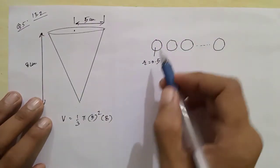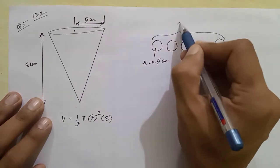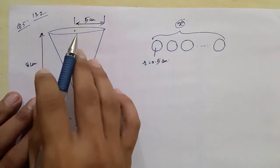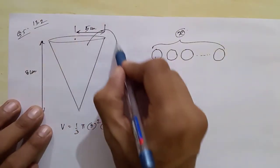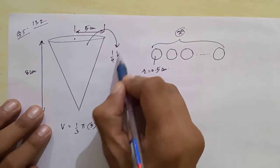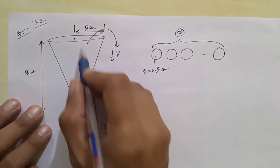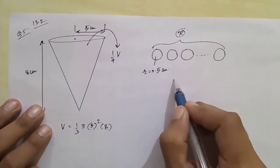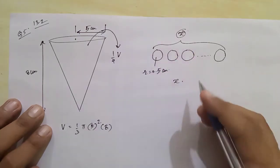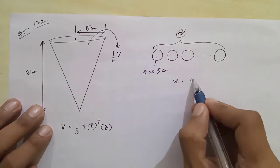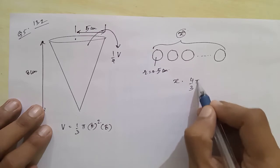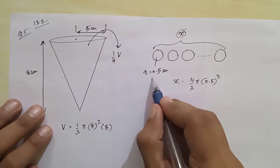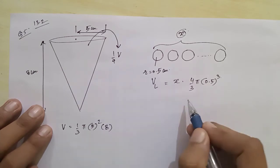There are a number of lead shots dropped in. How many lead shots are there such that when they are dropped in, one-fourth of the volume flows out? Let there be x lead shots. The volume of a sphere is 4/3 π r³. So the total volume of lead shots is x times the volume of one sphere.